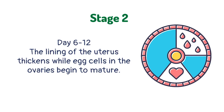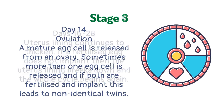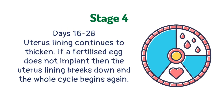On day 14, ovulation occurs — a mature egg cell is released from an ovary. Sometimes more than one egg cell is released, and if both are fertilized and implant, this leads to non-identical twins.